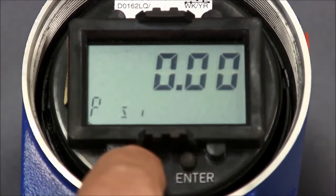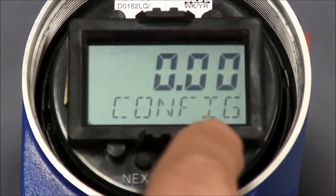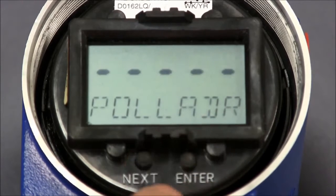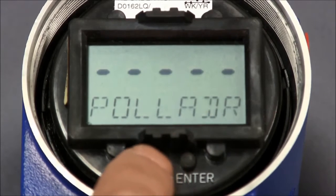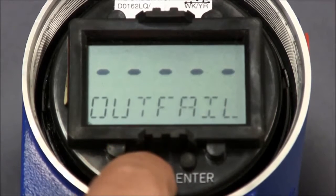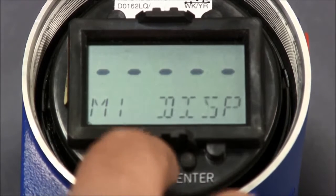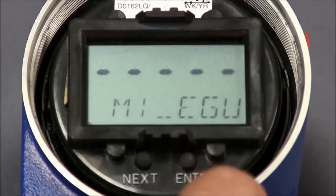Press the next button two times and config will be displayed. Press enter. Poll address will be displayed. Press the next button nine times and M1E will be displayed.